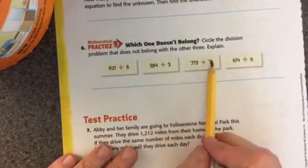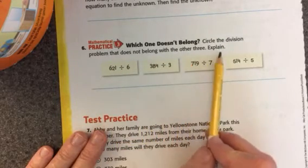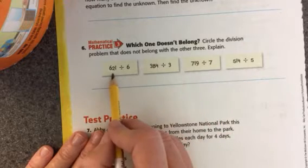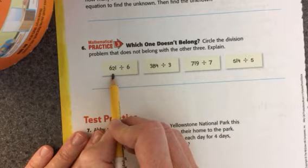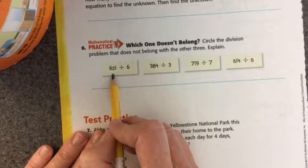Here we have which one doesn't belong. Circle the division problem that does not belong with the other three, and then explain. I'm wondering if it has anything to do with whether the answers have 0s or not.